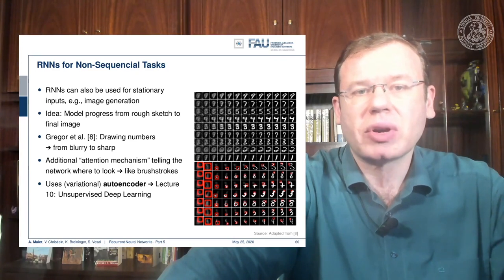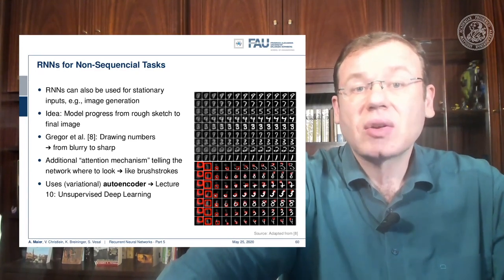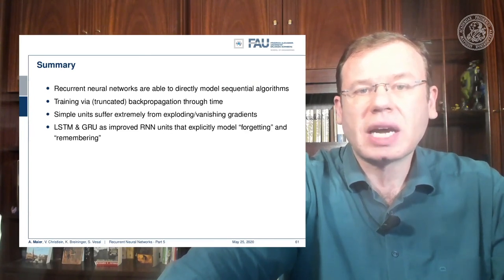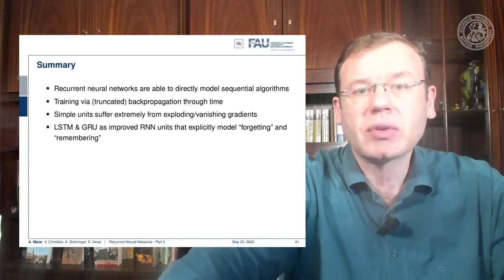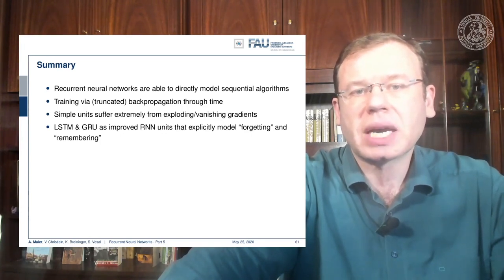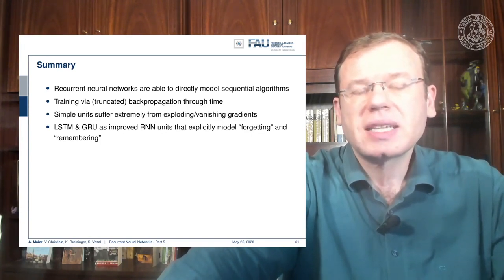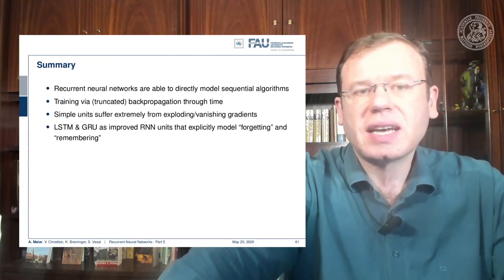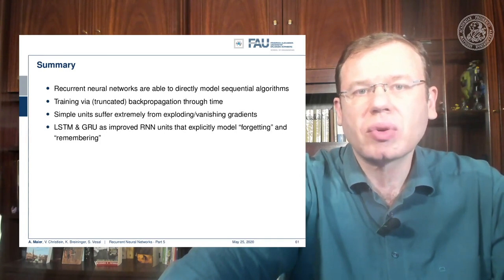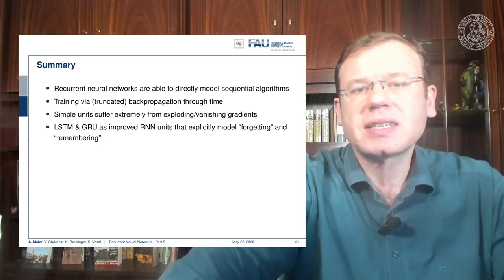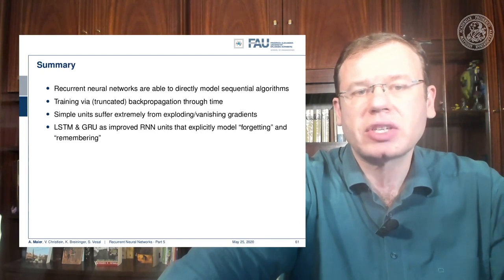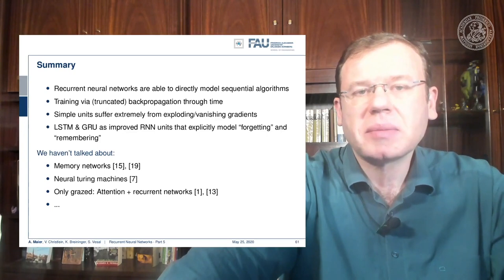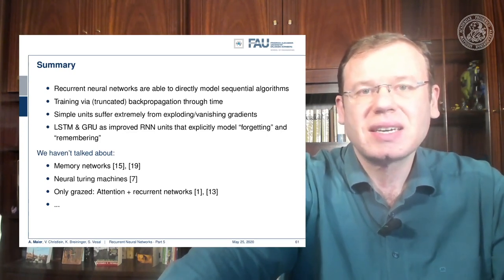Let's summarize this a little bit. You've seen recurrent neural networks are able to directly model sequential algorithms. You train via truncated back propagation through time. The simple units suffer extremely from the exploding vanishing gradients, and we've seen that the LSTMs and GRUs act as improved RNNs that explicitly model this forgetting and remembering operation.